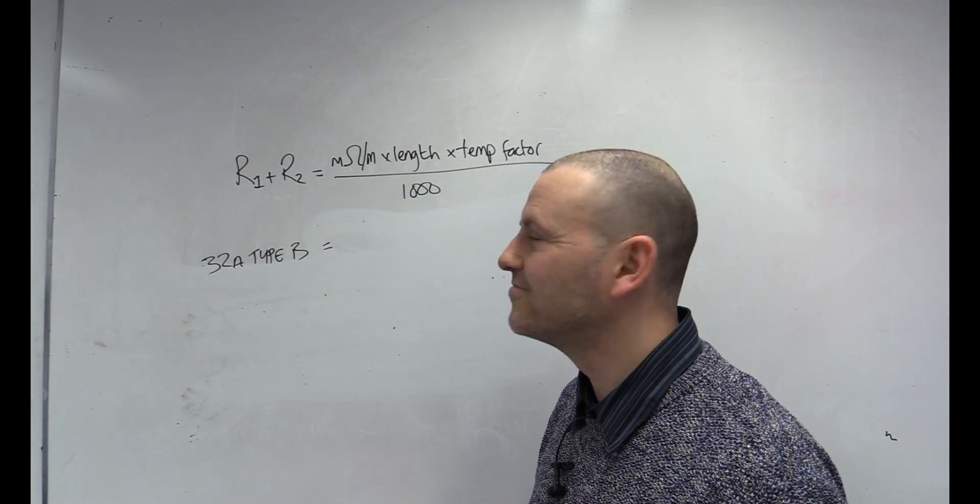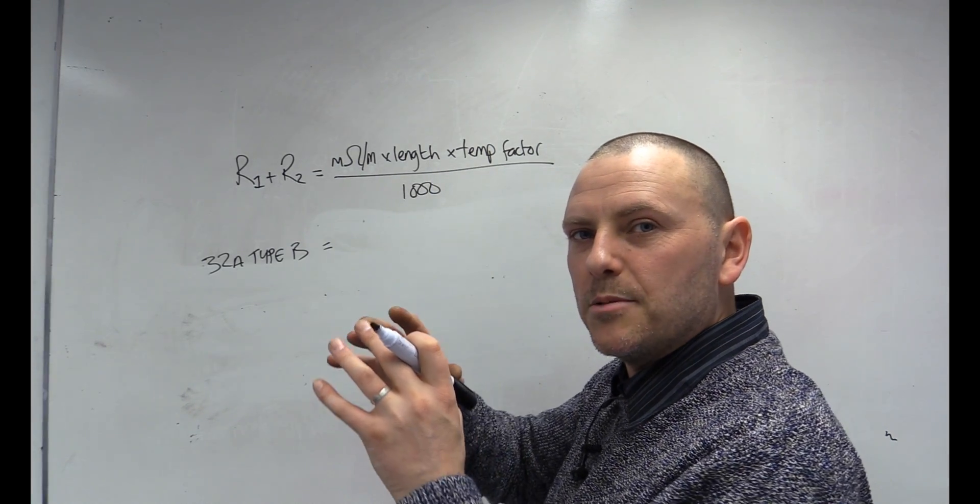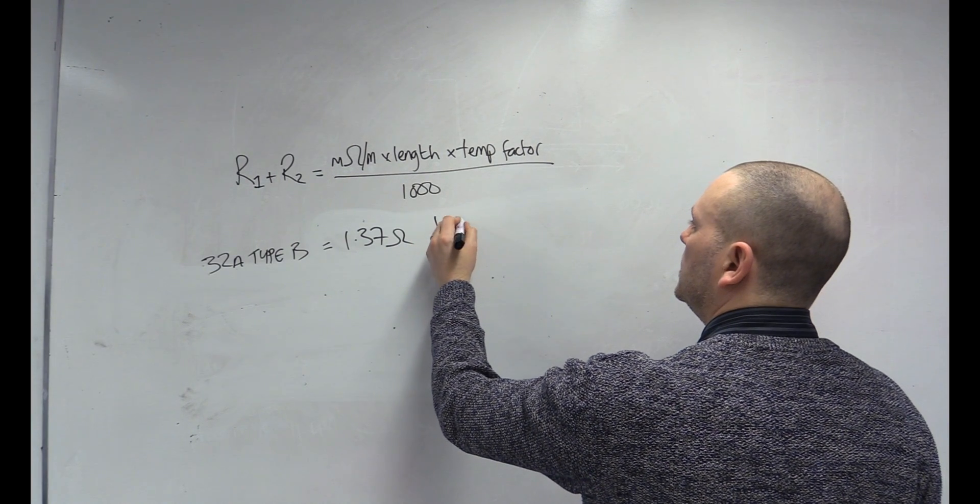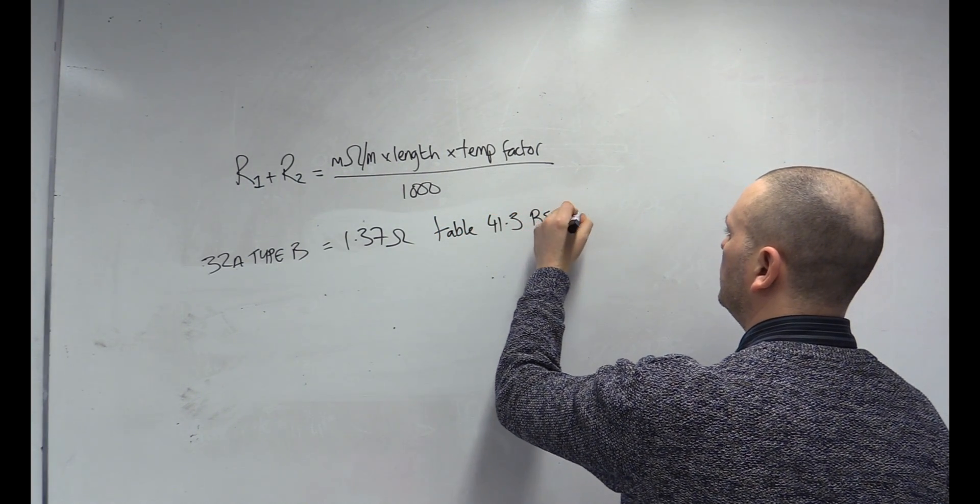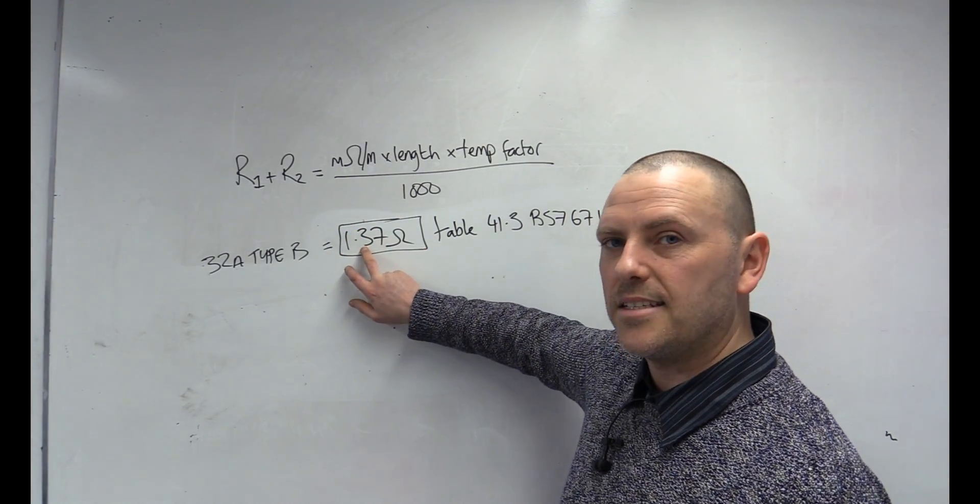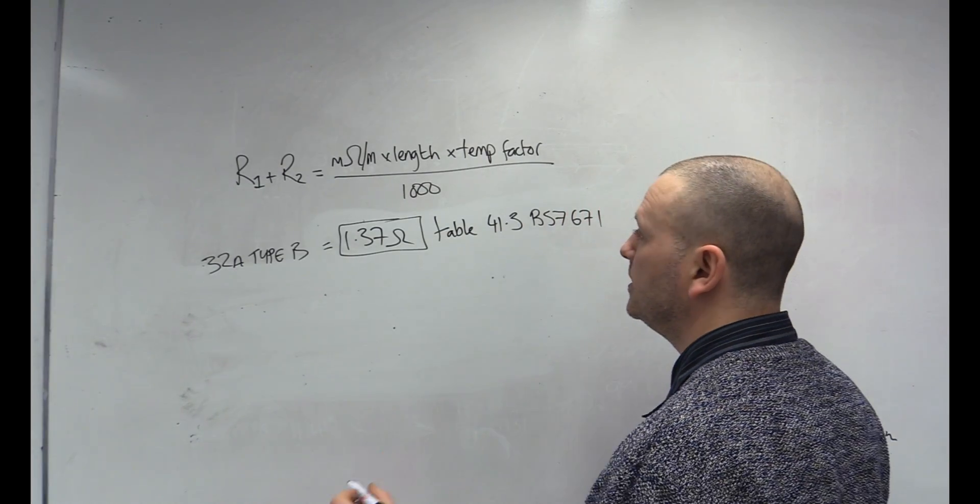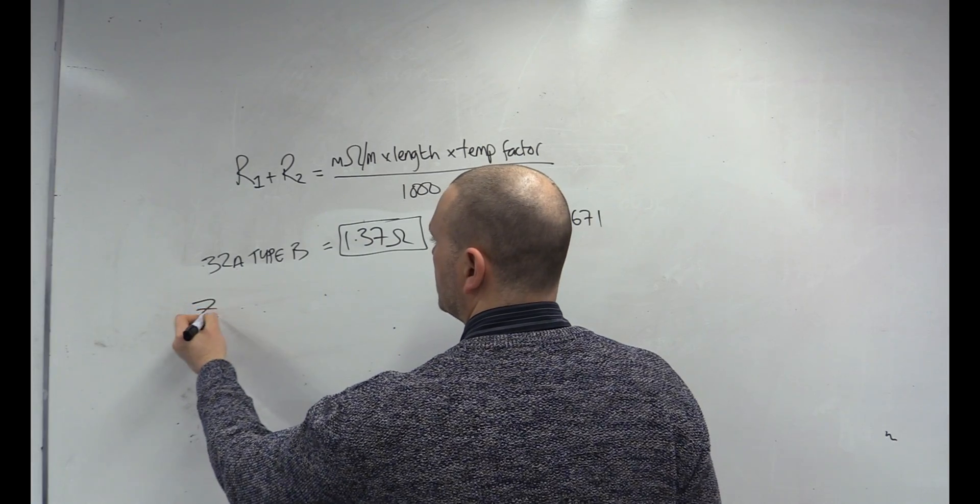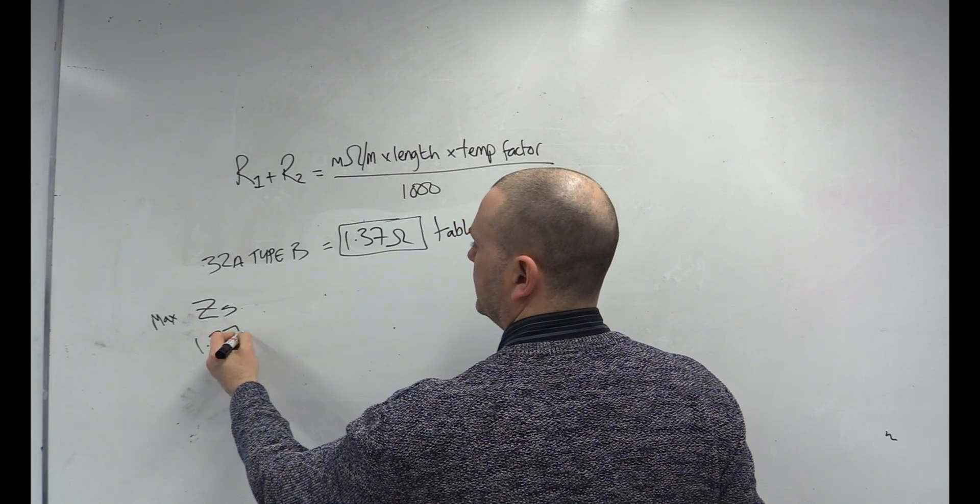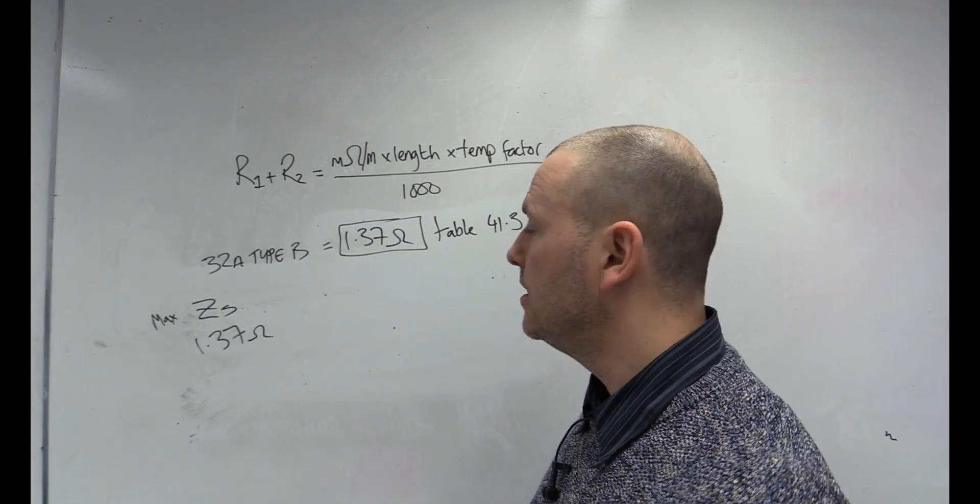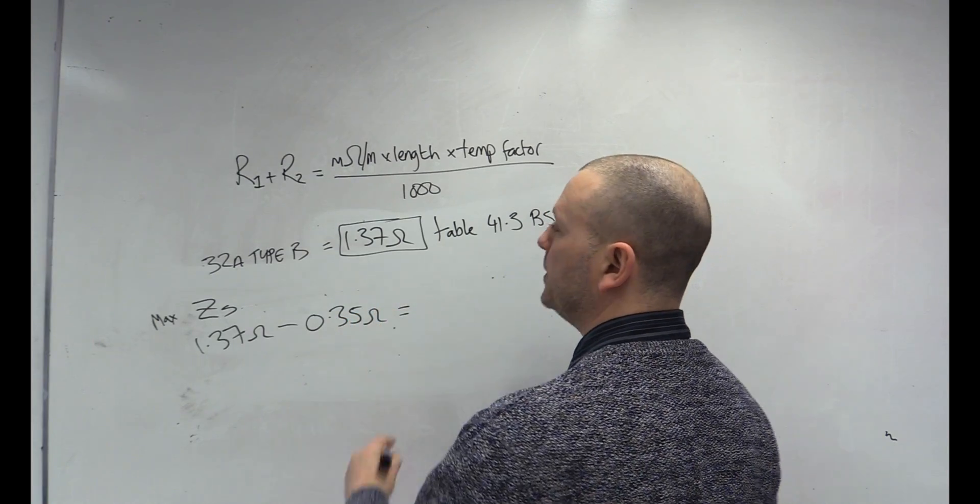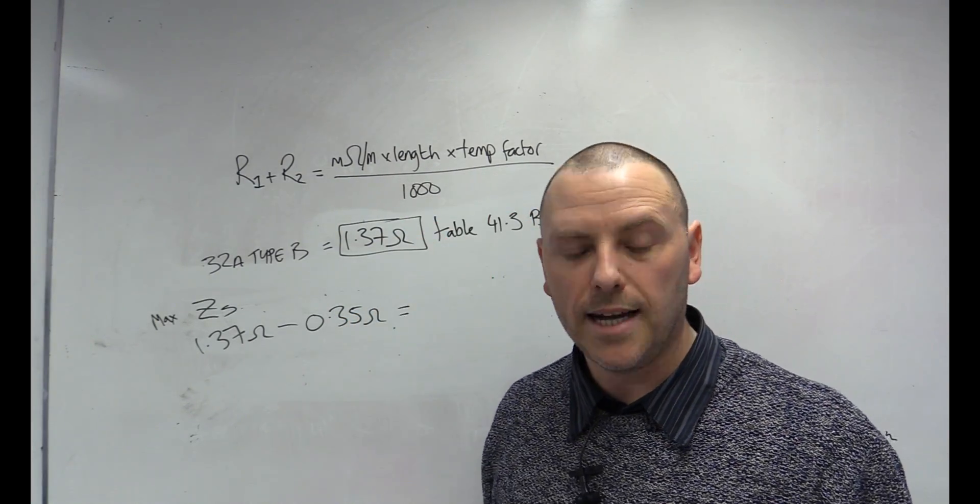Now, the maximum ZS, when we're in design mode, we need maximum ZS at that temperature. So, in this case it's 1.37 ohms, and you can find that, table 41.3 BS7671, around probably page 60ish, I think. But this is our kind of maximum ZS. Then, if we know our maximum ZE for the property, we can start building an equation to calculate our maximum R1, R2. So, if our max ZS is 1.37 ohms, and let's say we've got a TNCS earthing arrangement, so that's at a maximum 0.35 ohms, we take away that 0.35 ohms, what we'll be left with is the maximum internal loop that we're allowed.